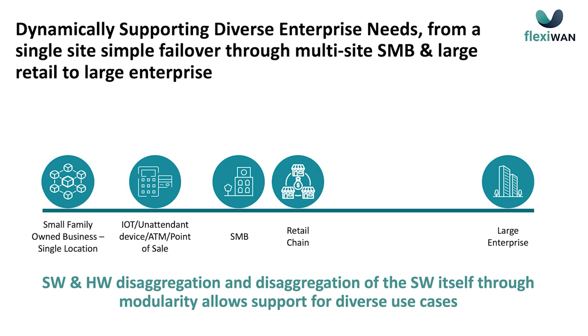This flexibility and open architecture allows us to support multiple market segments and dynamically move along the line of enterprise requirements. We see a significant gap in the market when it comes to mid-market SMBs and retail — that's an area where we have a lot of deployment. We also offer complete disaggregation between software and hardware. On our website, we have hardware partners — you can select hardware, get a quote, or even buy it through us — but most of our customers buy hardware directly from the hardware vendor, pre-installed with FlexiWAN.